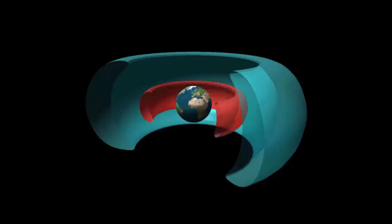The Van Allen belts are toroidal belts which surround the Earth — essentially tire-shaped or donut-shaped. The outer Van Allen belt is shown in blue and the inner Van Allen belt is shown in red.